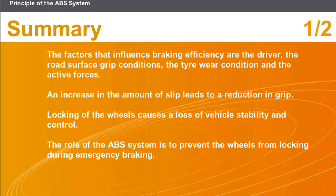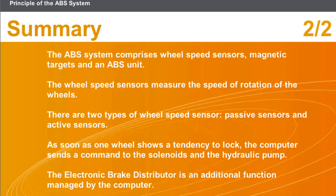In this section we covered the following points: the factors that influence braking efficiency are the driver, the road surface grip conditions, the tyre wear condition, and the active forces. An increase in the amount of slip leads to a reduction in grip. Locking of the wheels causes a loss of vehicle stability and control; the role of the ABS system is to prevent the wheels from locking during emergency braking. The ABS system comprises wheel speed sensors, magnetic targets, and an ABS unit. The wheel speed sensors measure the speed of rotation of the wheels. There are two types: passive sensors and active sensors. As soon as one wheel shows a tendency to lock, the computer sends a command to the solenoids and the hydraulic pump. The electronic brake distributor is an additional function managed by the computer.